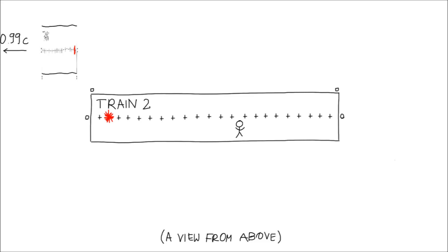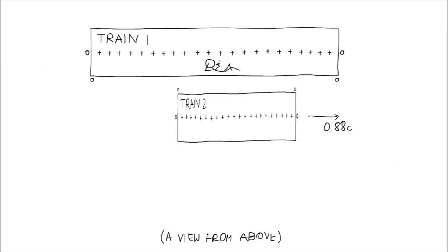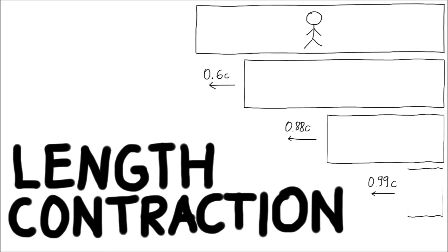Of course, we could carry out the same reasoning for the passenger of the other train. So from his point of view, our train is shorter than his. In fact, for any observer, moving objects are shorter in the direction of movement. This is called length contraction.